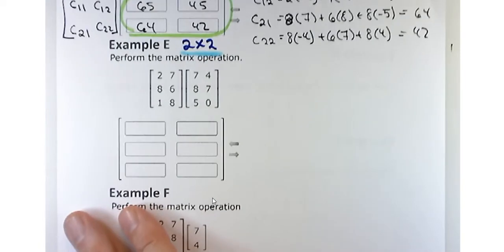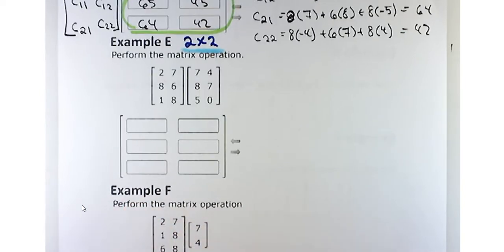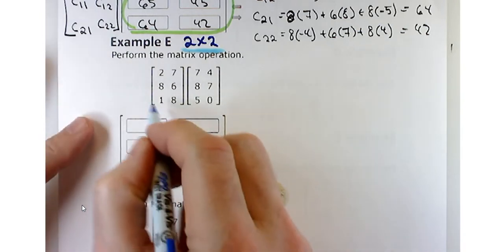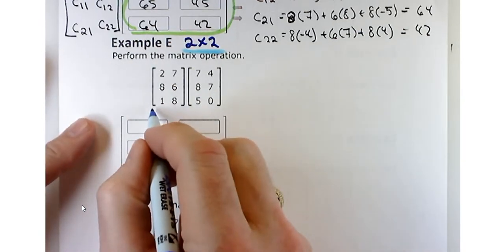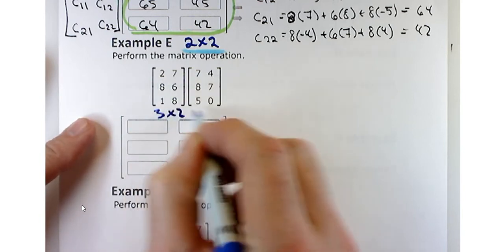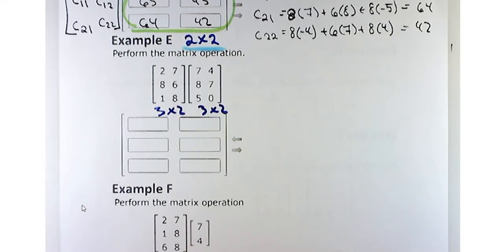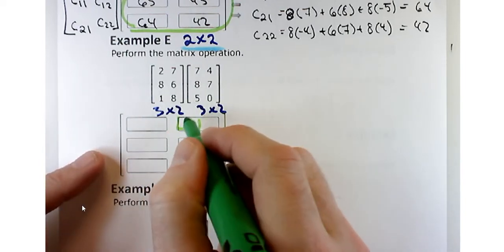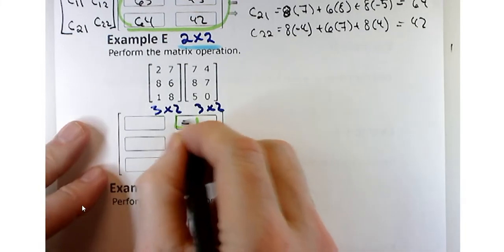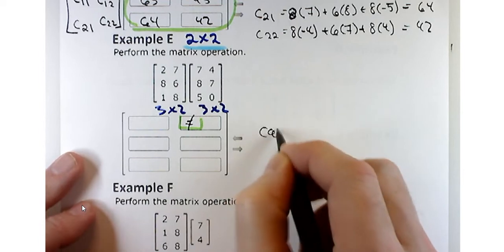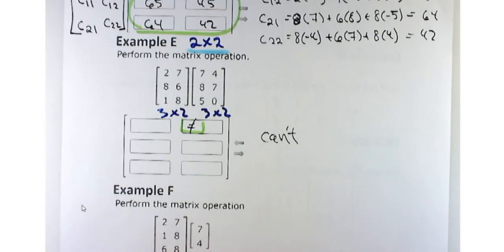Let's take a look at example E. Can we multiply these together? The first matrix is 3 by 2 and the second is also 3 by 2. Can we multiply them? No — those inner dimensions are not equal, so you can't. You don't have to go any further than that.